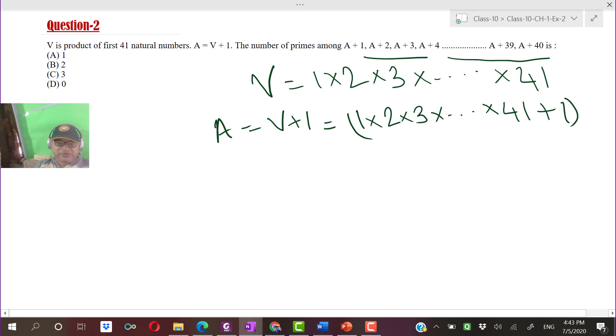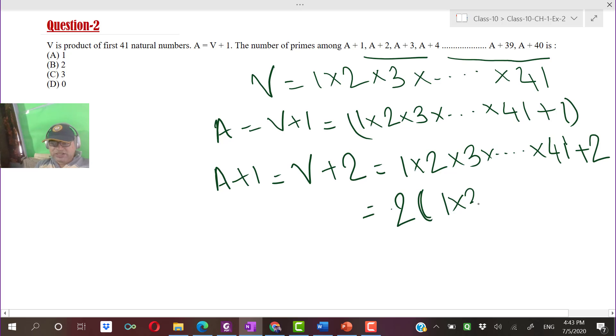Now A plus 1 will equal V plus 2, which is 1 into 2 into 3 into dot dot dot up to 41, plus 2.